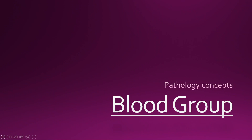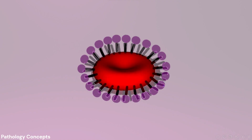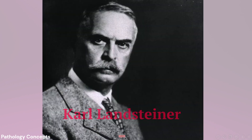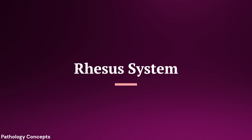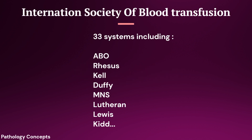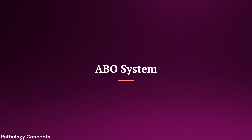To understand a blood group we have to understand the red blood cells first. Red blood cells are differentiated from each other on the basis of their surface antigen structures. It was Karl Landsteiner who first discovered the ABO blood group system in 1900. The International Society of Blood Transfusion has since recognized 33 blood group systems.